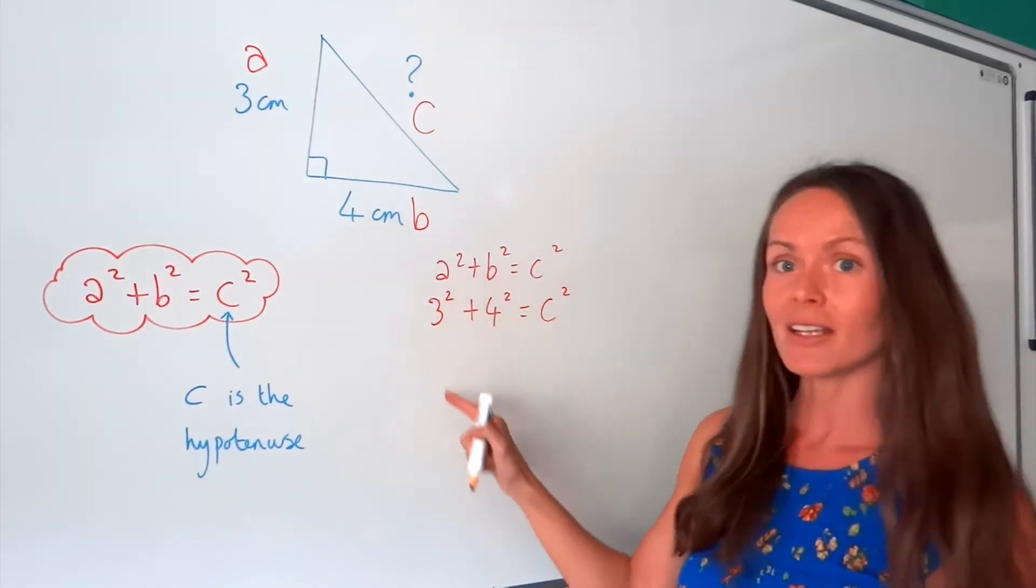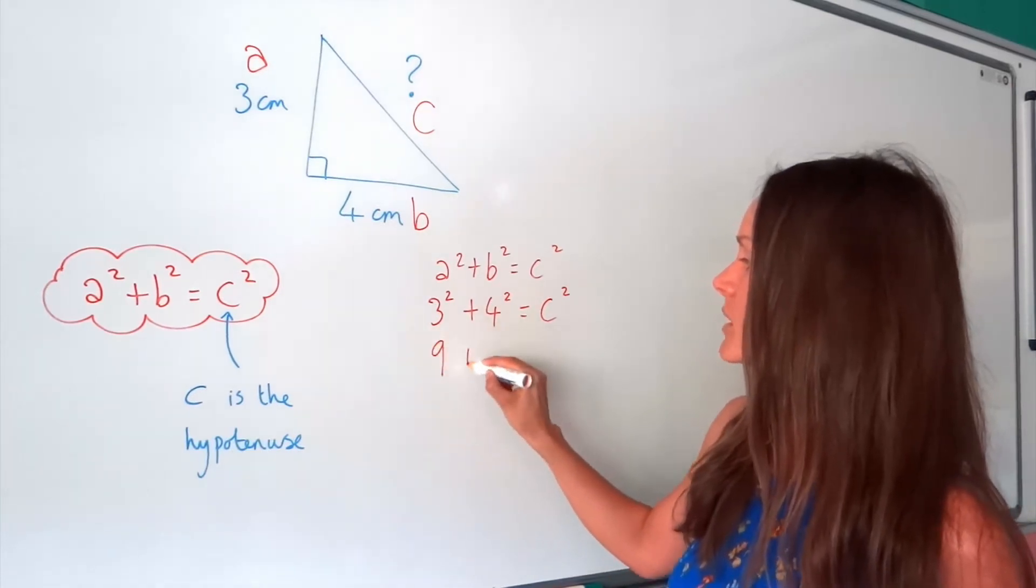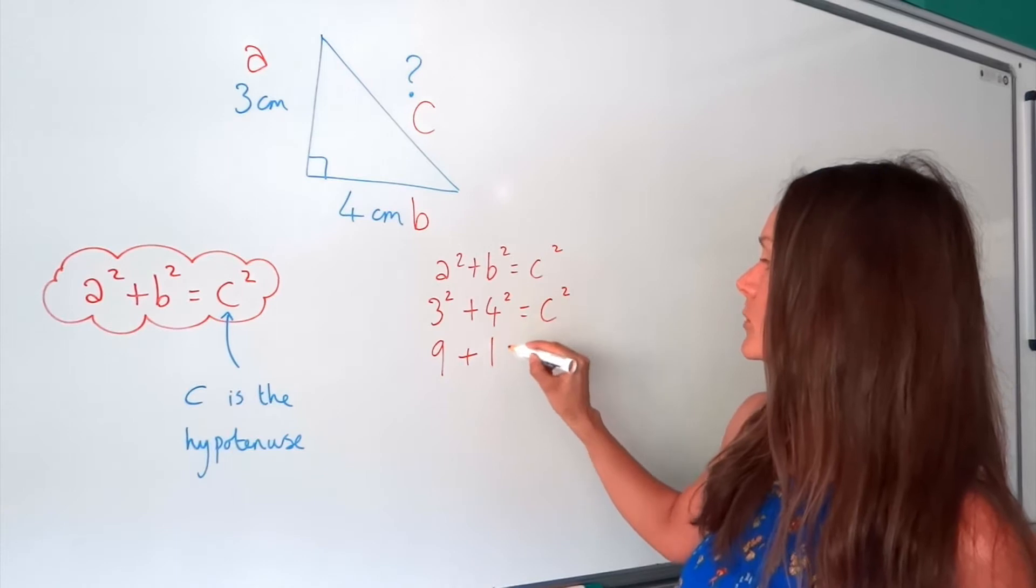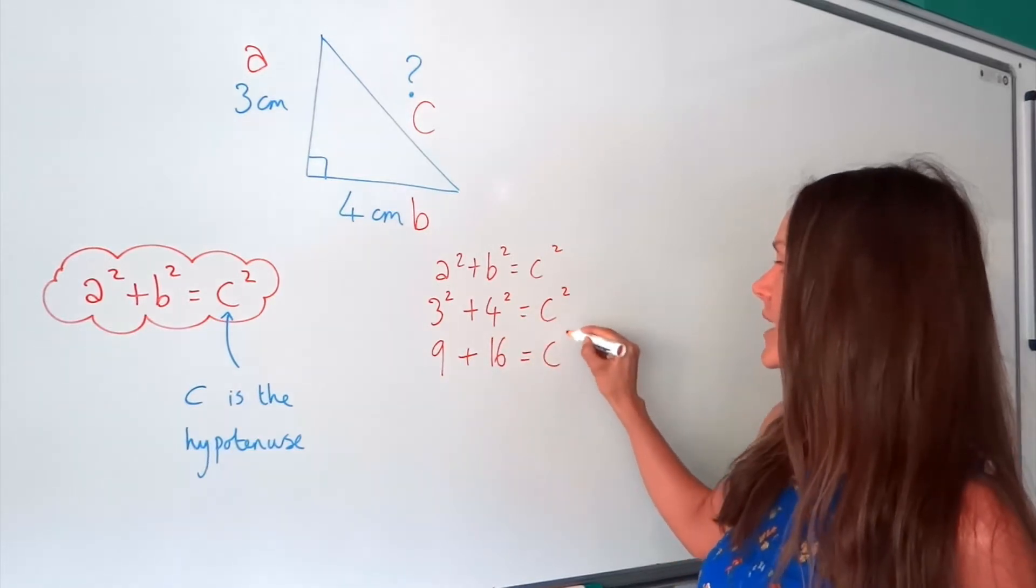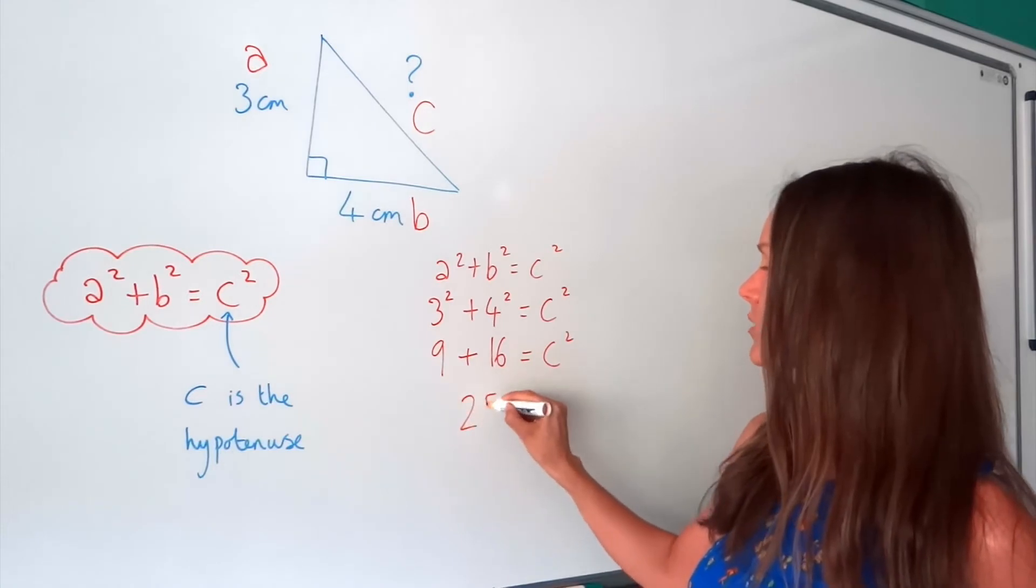Now on the left-hand side, I can actually calculate that. So three squared is three times three, which is nine. Four squared is four times four, which is 16. And the c, again, stays the same. So when I add those two numbers together, I get 25.